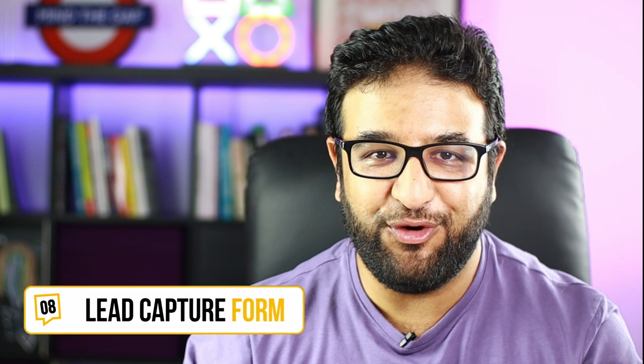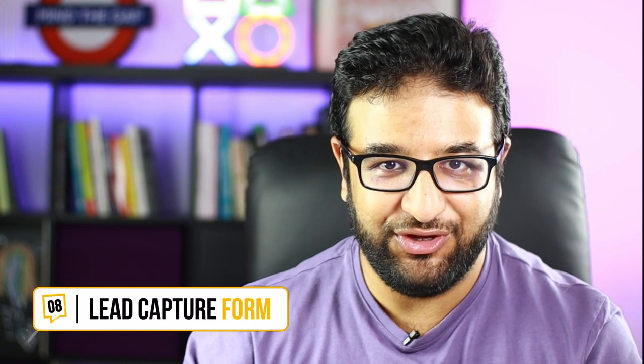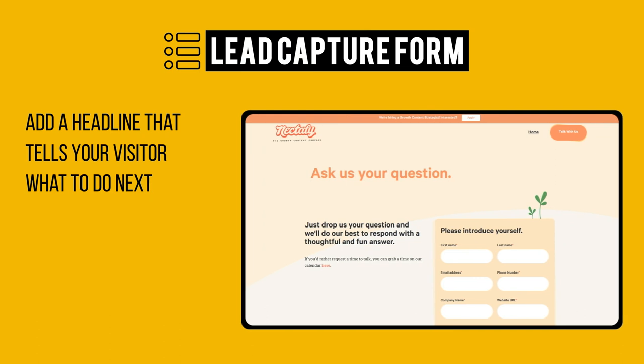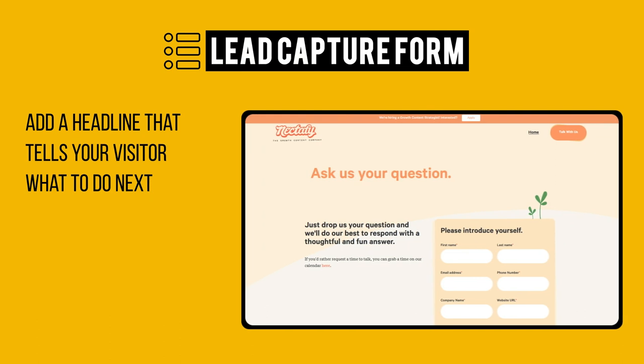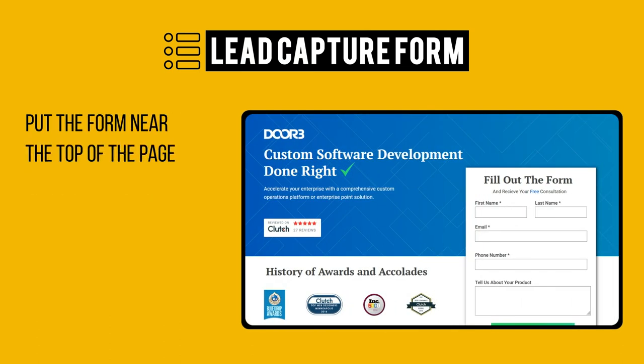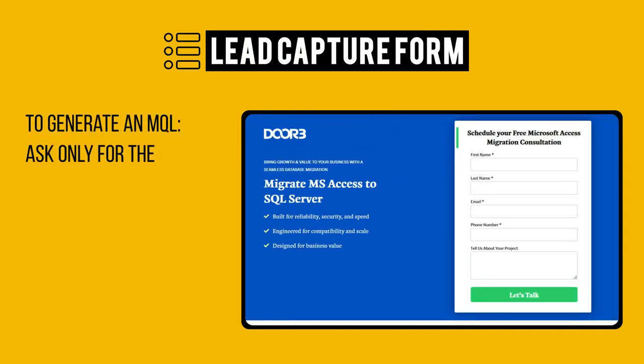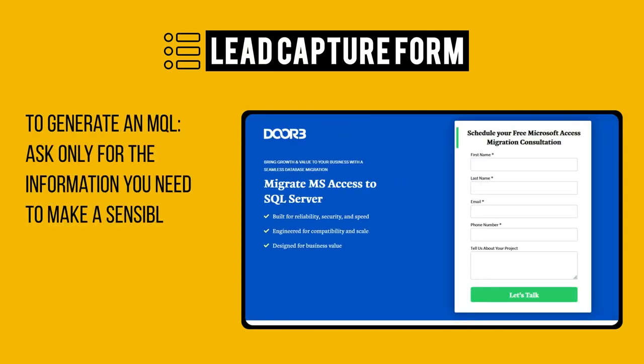A lead capture form will allow visitors to give out their information so you can later contact them. Depending on your campaign, you can limit the form elements to two — for example, name and email — or capture more information like name, email, message, and phone number. To build a form that captures leads, add a headline that tells your visitor what to do next, put the form near the top of the page, and to generate an MQL, ask for the information you need to make a sensible first contact phone call.